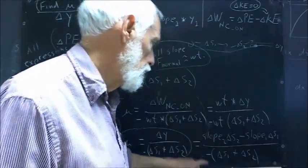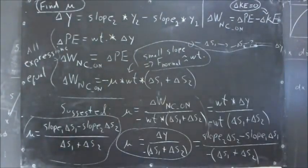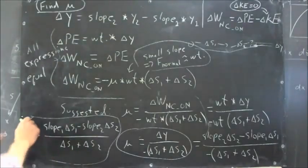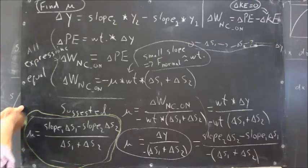So the weight times delta Y, well, weight divides out. You just have your delta Y here. Slope 2 delta S2 minus slope 1 delta S1 over the negative of delta S1 plus delta S2.